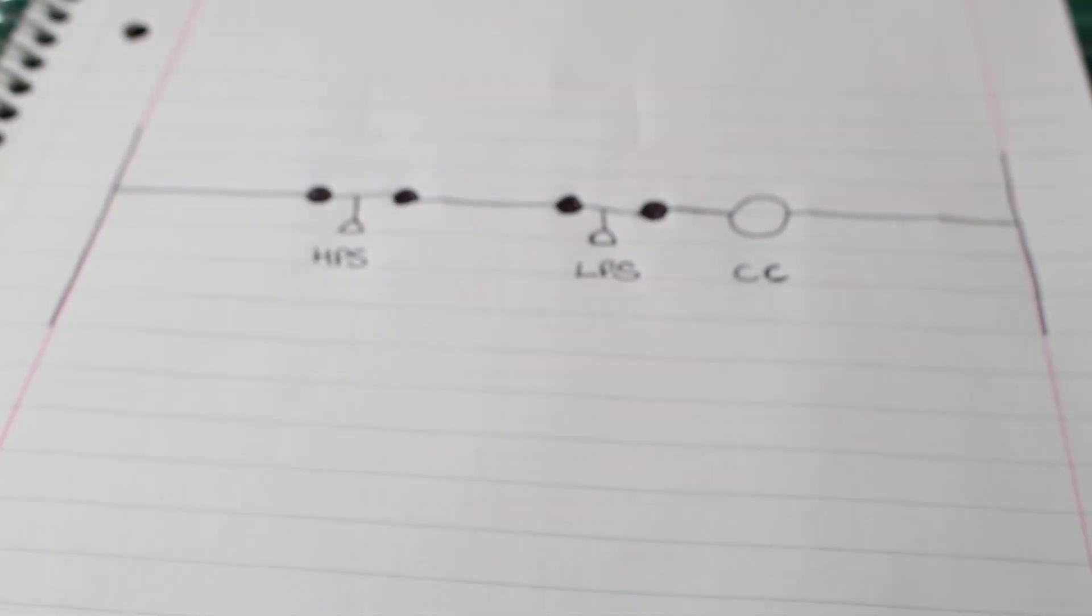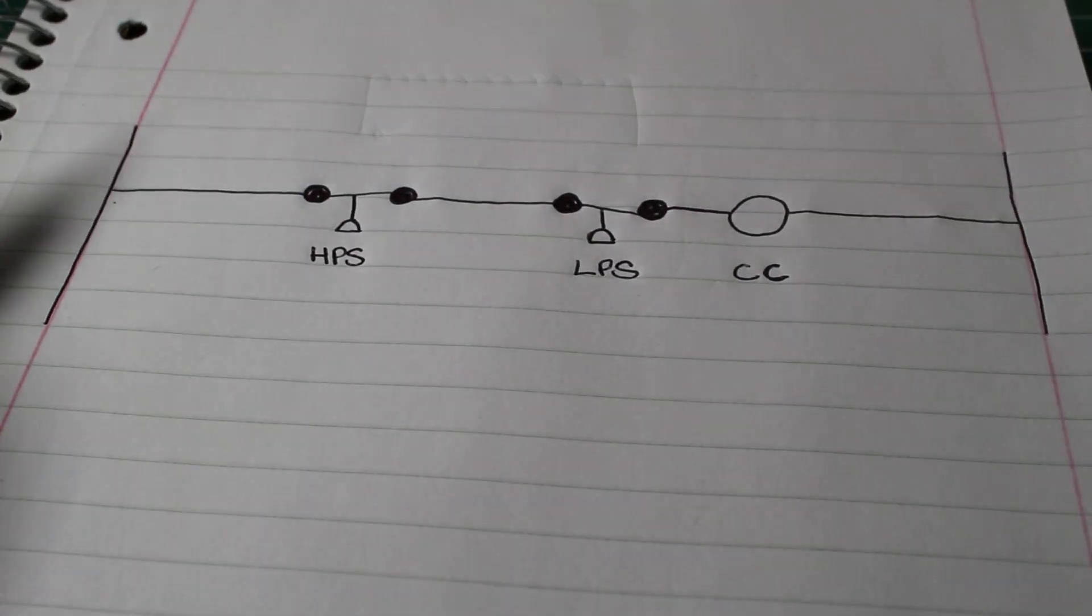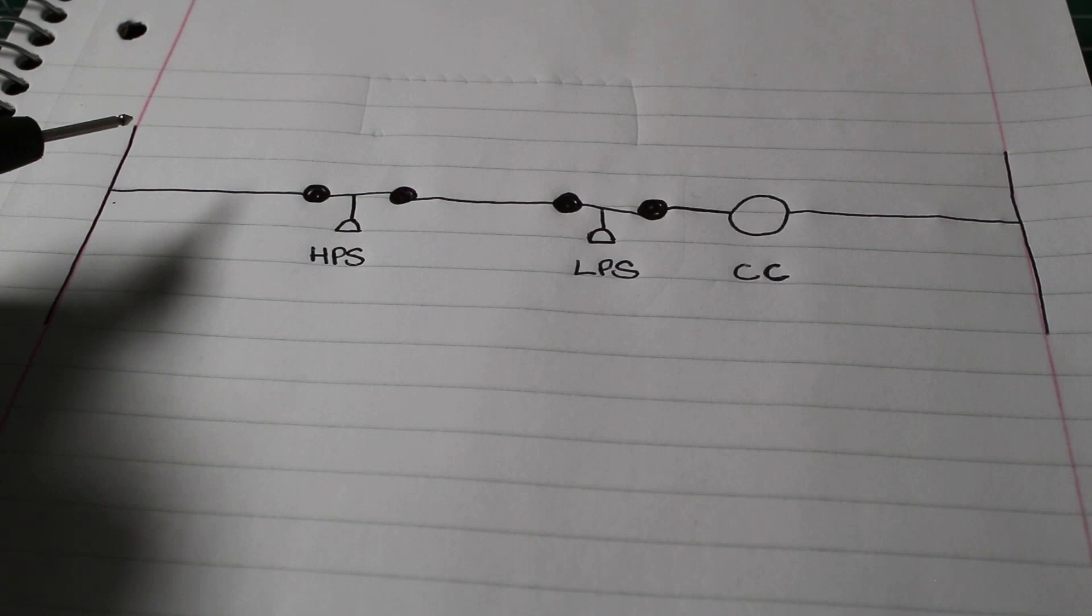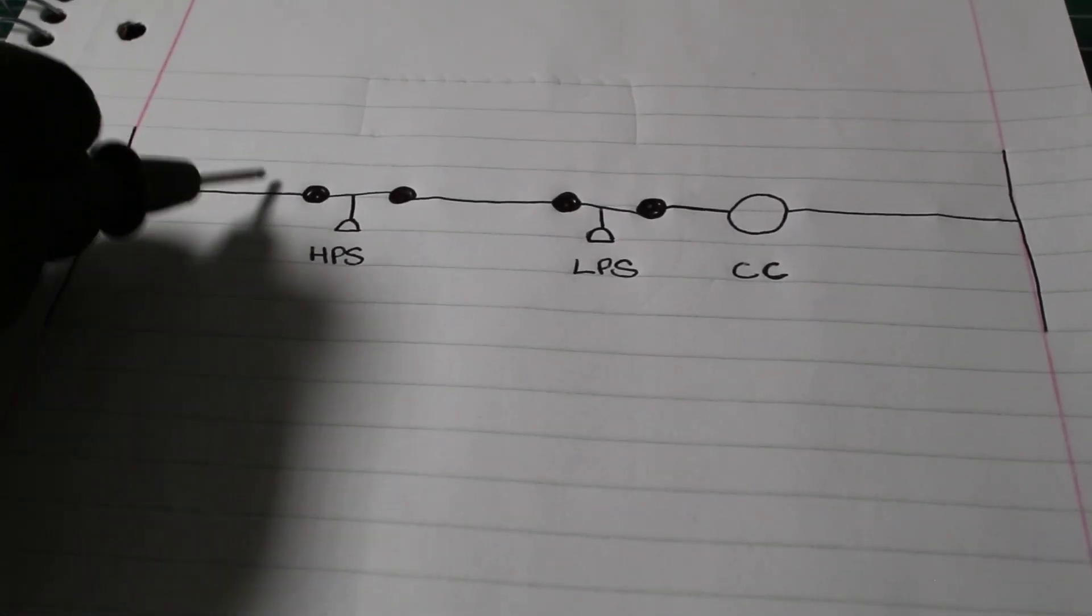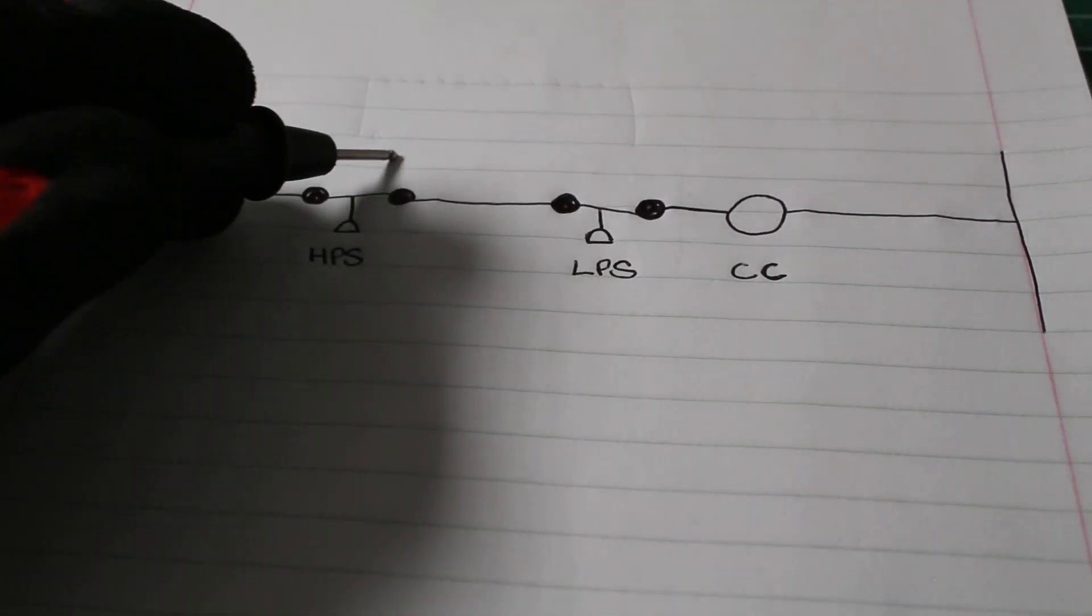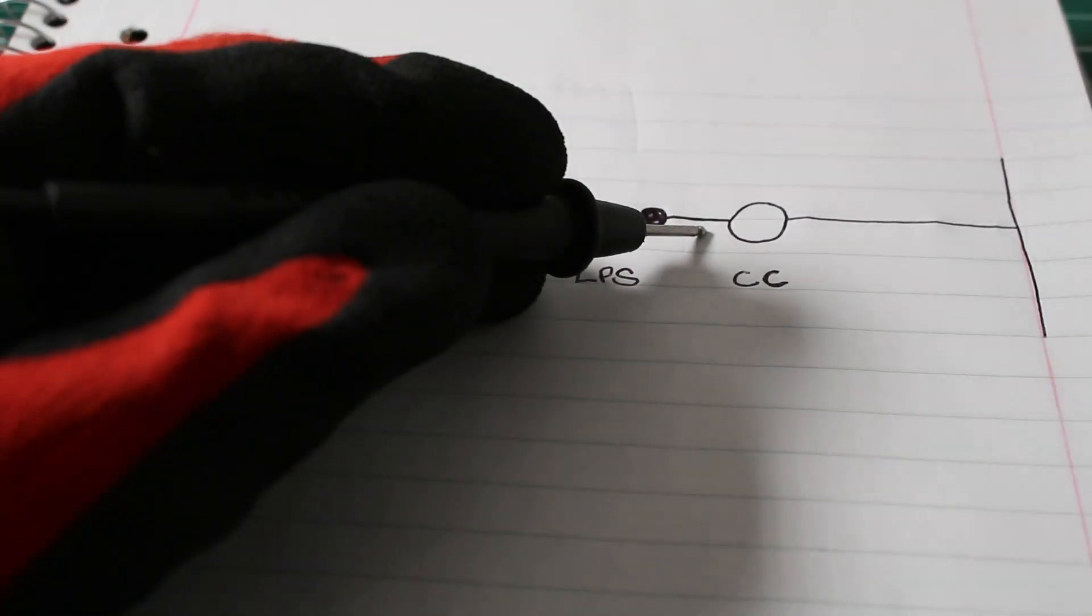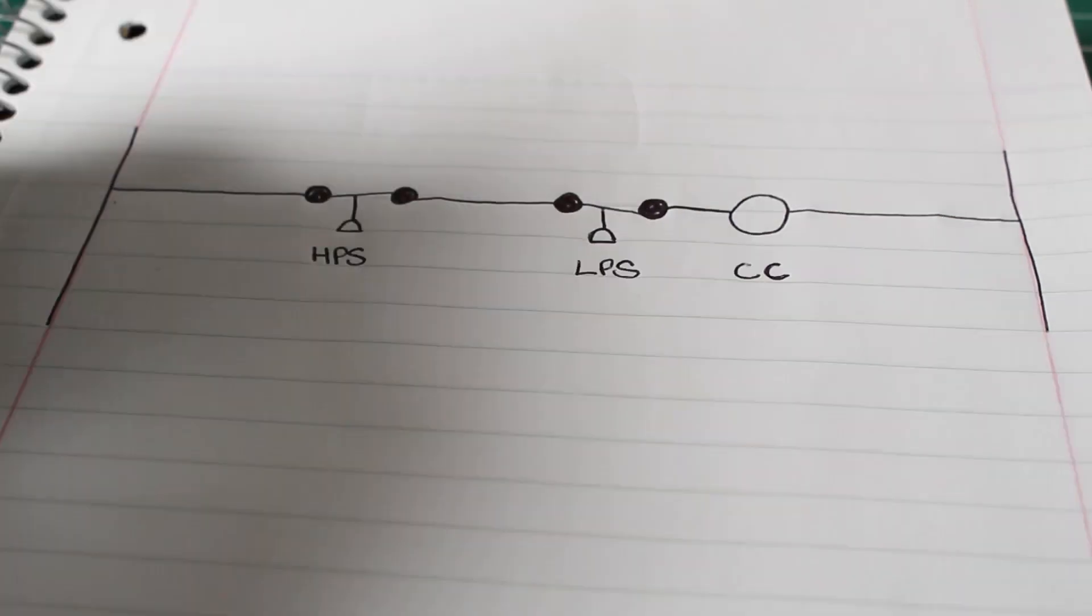So let's say this whole line has electricity and this coil is energized. If we have an event where we have a high pressure situation, this switch will open, thus stopping the flow of electricity to our contactor coil and shut down our equipment.